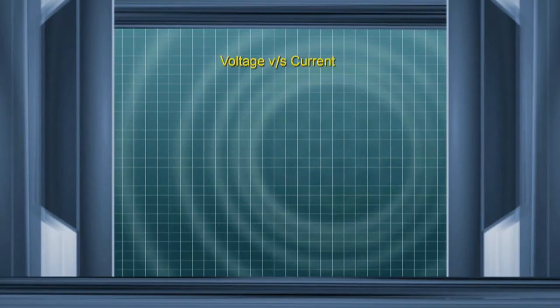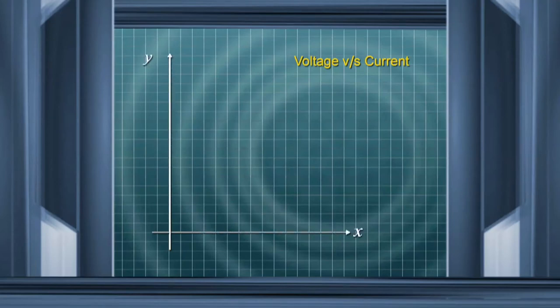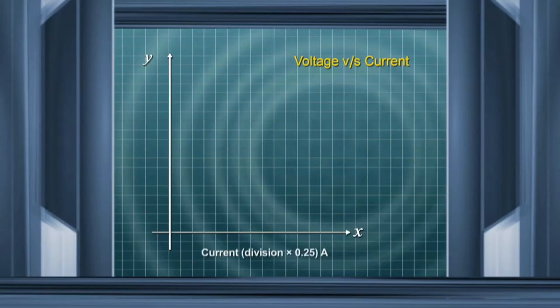The heading should always be mentioned. We need not take the center of the graph paper to mark the lines; the x and y axes can be drawn at the edges. Choosing this entire graph sheet to show our variation is absolutely a must because it is not a number graph. On one axis we write current and on the other voltage.